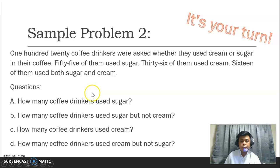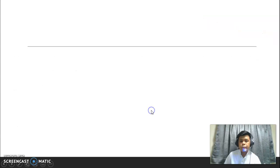Next, it's your turn. Basahin natin yung sample problem number 2. 120 coffee drinkers were asked whether they used cream or sugar in their coffee. 55 of them used sugar, 36 of them used cream, 16 of them used both sugar and cream. Questions, how many coffee drinkers used sugar? Letter B. How many coffee drinkers used sugar but not cream? Letter C. How many coffee drinkers used cream? And letter D. How many coffee drinkers used cream but not sugar? Basahin nyo, i-analyze nyo yung problem, and then i-post itong video, i-try nyo muna sagutan.